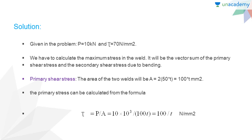Here we have the solution. Given in the problem, we have P equals 10 kilonewtons and the permissible shear stress given by tau equals 70 newton per millimeter square. This is the limiting total shear stress that should be maintained in the weld.